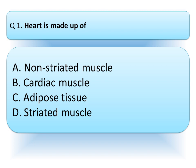Heart is made up of — and the options are: option A, Non-striated muscle; option B, Cardiac muscle; option C, Adipose tissue; or option D, Striated muscle. Think about the correct answer and drop your answer in the comment box.